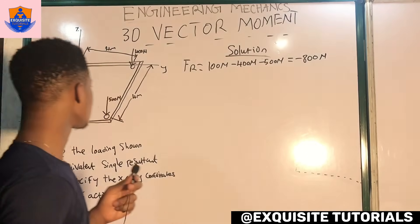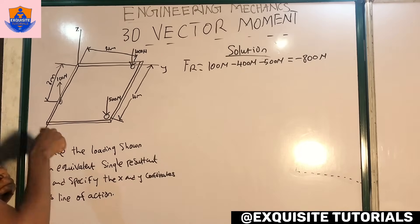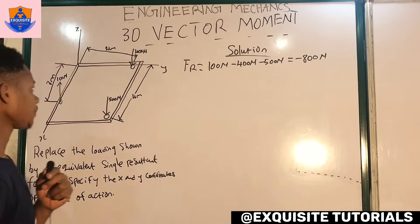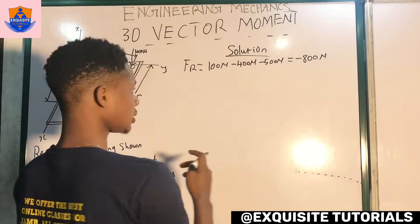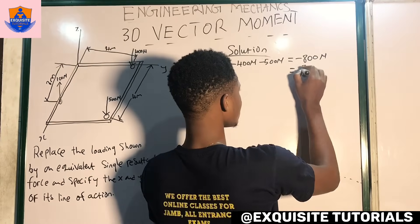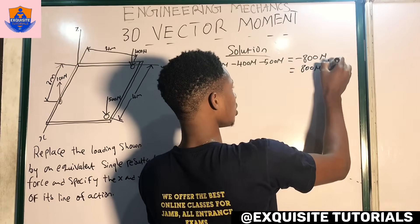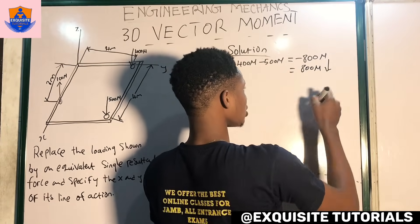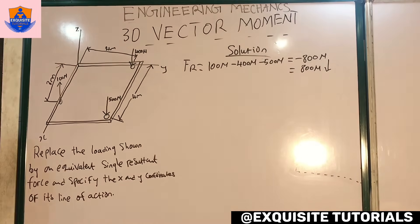This minus 800 newtons tells us that the resultant force is going downward — into the plane. So the resultant force is 800 newtons going down, into the plane.